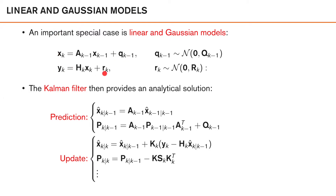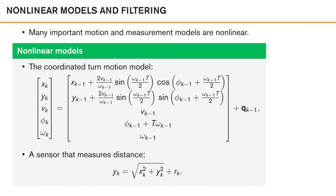For linear and Gaussian models, both the motion model and measurement model are linear functions of the state with additive Gaussian noise. For these models, we can solve the filtering equations analytically, and the solution is given by the Kalman filter equations for the prediction step and the update step. However, many important motion and measurement models are non-linear and would therefore not fit into the Kalman filter framework.